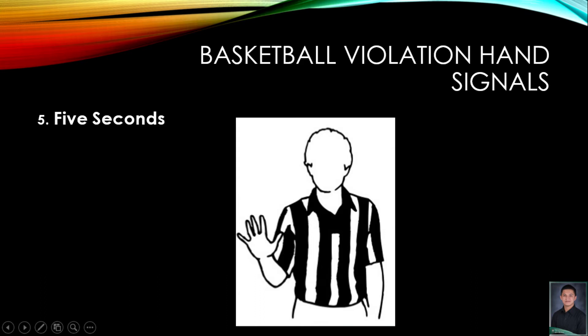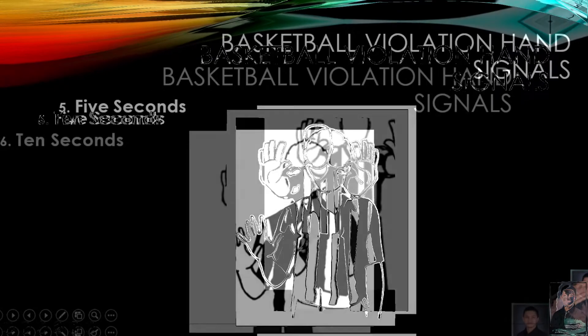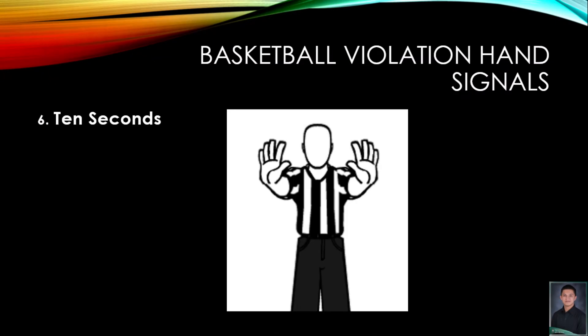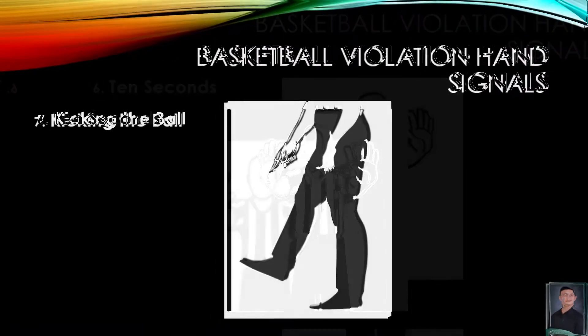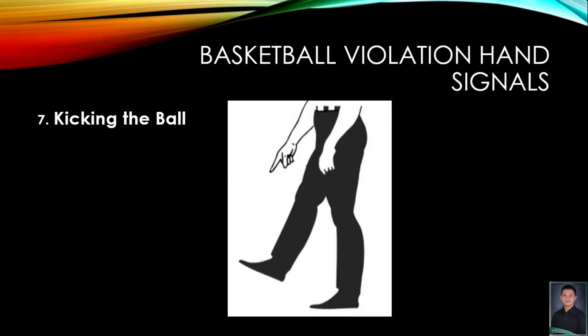will have five fingers raised with arm extended upward. Number six, ten seconds violation. The ten seconds violation is shown when the official has ten fingers raised with both arms extended upwards. Number seven is the kickball violation. When a player kicks the ball, the referee will have one foot raised in front.